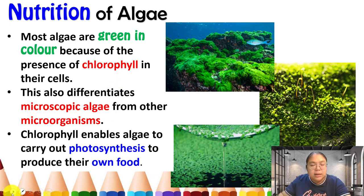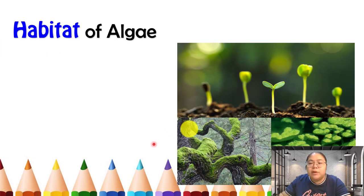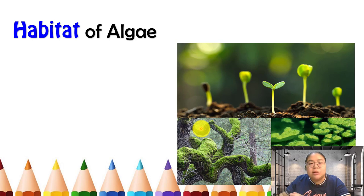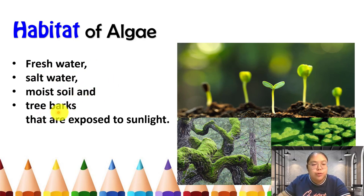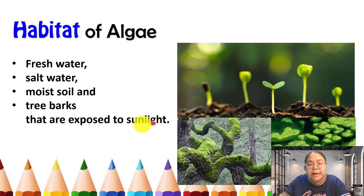Now the habitat of algae. Since algae perform photosynthesis, they need sunlight and water. Their habitats include fresh water, salt water, moist soil, and tree bark that is exposed to sunlight. This means they tend to grow at the surface rather than at the bottom, because they need to receive sunlight.